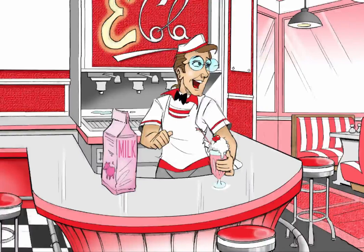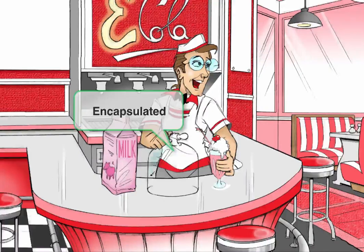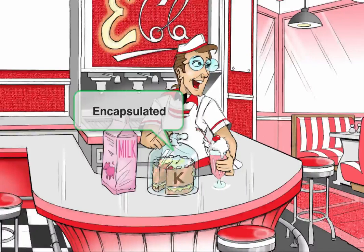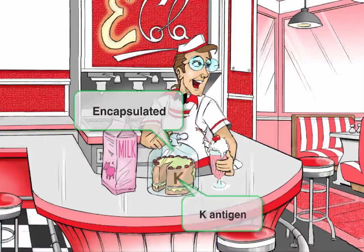E. coli is also encapsulated. So we'll draw this familiar glass capsule, and we'll have it surrounding a cake. The cake stands for K antigen, which is an important antigen present on the capsule used for serotyping. We'll talk more about this when we get to clinical presentations.